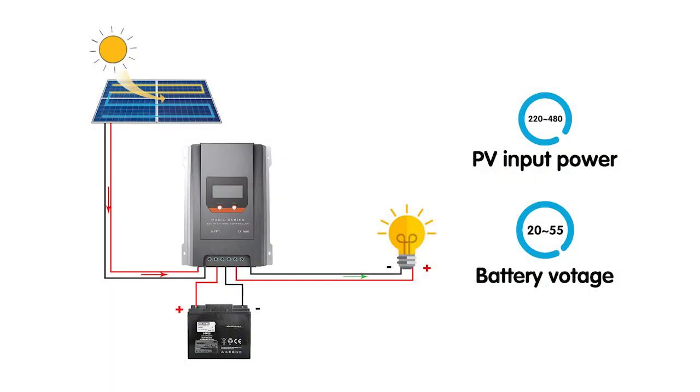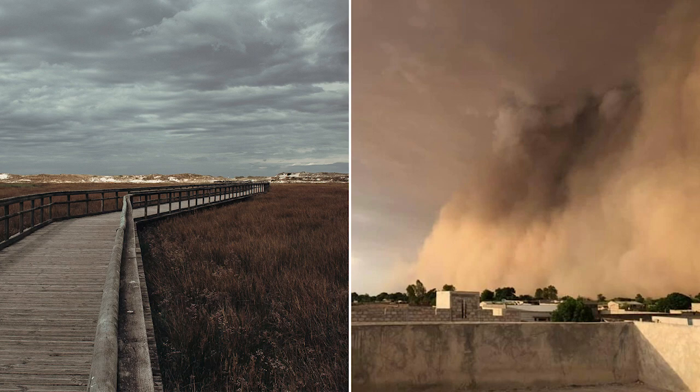Now let's talk about the Maximum Power Point Tracking, the MPPT solar charge controller. These are advanced devices designed to optimize the efficiency of solar power systems by continuously adjusting the electrical operating point of the solar panel, ensuring maximum power output. MPPT controllers utilize complex algorithms to determine the ideal operating voltage and current for the solar panel. By constantly monitoring voltage and current, MPPT controllers can dynamically adjust the electrical characteristics of the system to extract maximum power available from the panel, even in varying weather conditions.